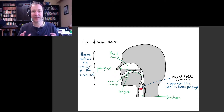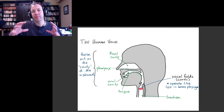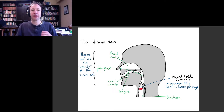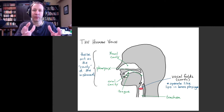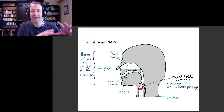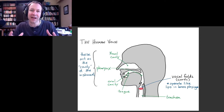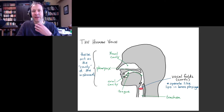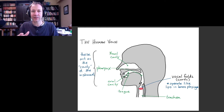Welcome. In this video we're going to talk about the human voice as a musical instrument. I want to start by reminding you that the various other instruments we've talked about, including stringed instruments and wind instruments, can be divided into two parts: a cavity where standing wave oscillations occur, and a way to drive those oscillations — such as reeds, air jets in recorders and flutes, or lips for brass instruments.